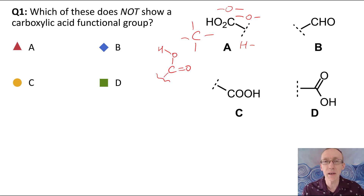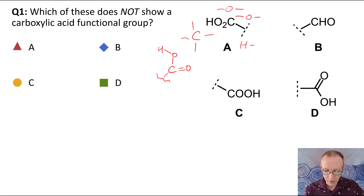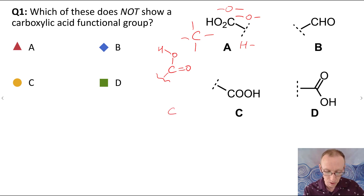We try to make it more obvious where the hydrogen is by putting the hydrogen further away from the carbon in the formula, so that it shows that it's attached to an oxygen rather than a carbon atom. Similarly, in compound C, we've got a carbon with an oxygen and an oxygen and there's a hydrogen attached.